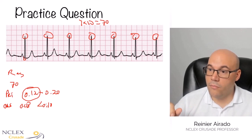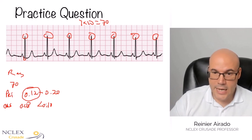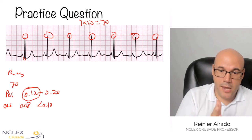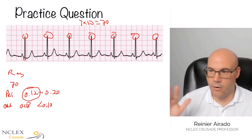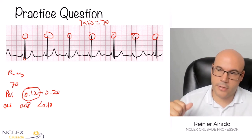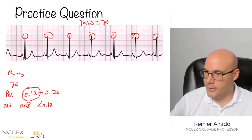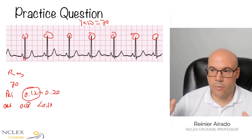We can see that we have a P wave followed by a QRS complex — P, QRS, P, QRS, P, QRS — consistently throughout the strip. The T wave also looks normal.